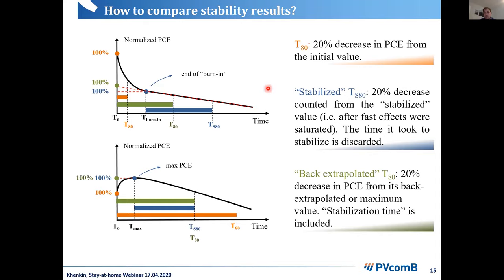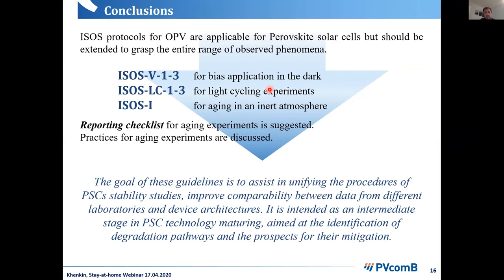Results should clearly state what lifetime is being reported, especially if the experiment stopped before reaching T80 and the value was extrapolated. Extrapolated results must be clearly distinguished from those actually measured. The purpose of this consensus is to get more reproducible and easily comparable results, and to accumulate enough data for data-driven approaches. A template can be downloaded from the journal website if you want to report data suitable for machine learning.